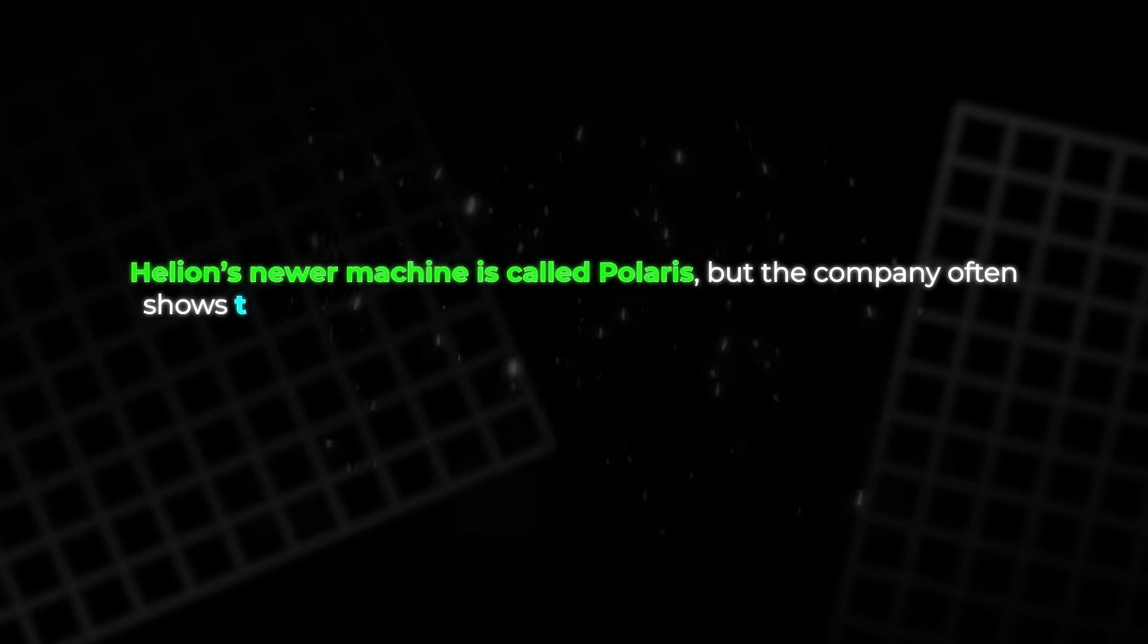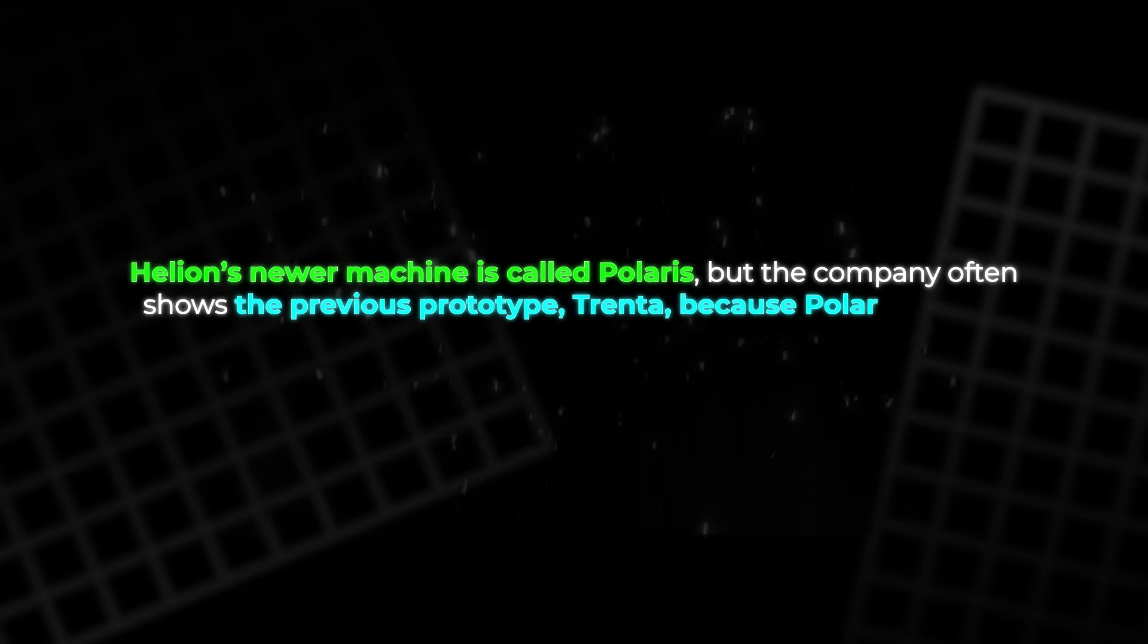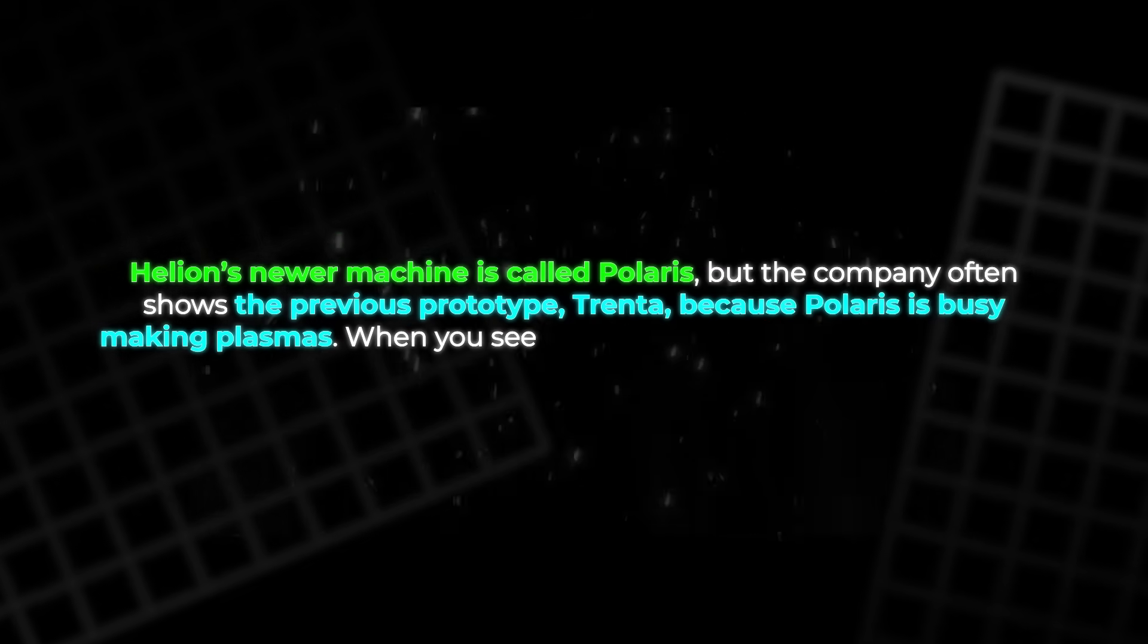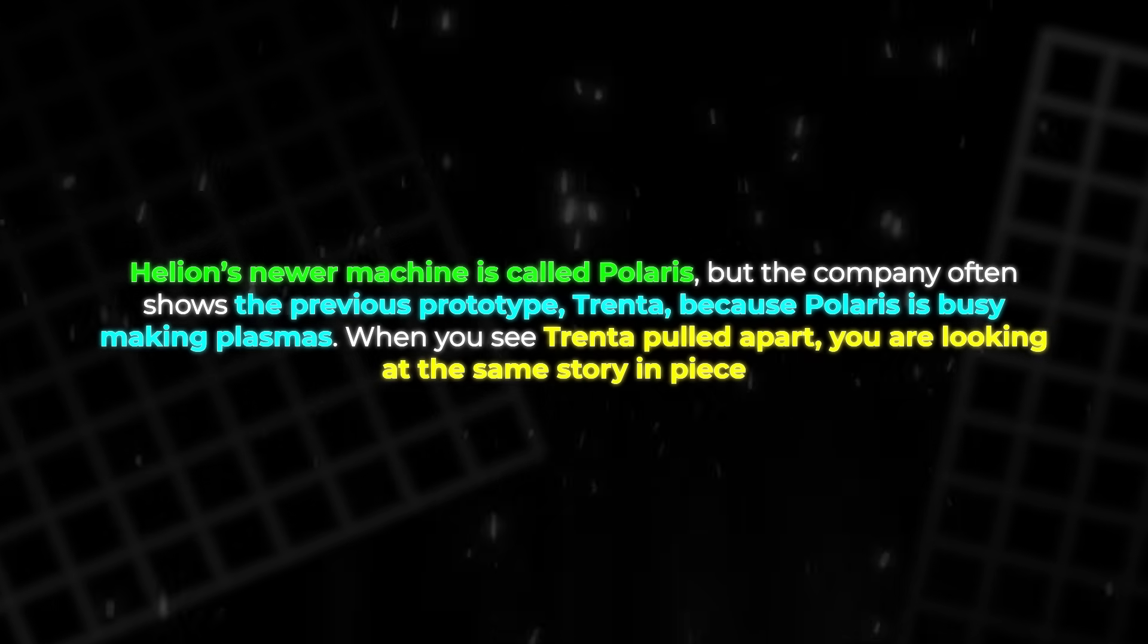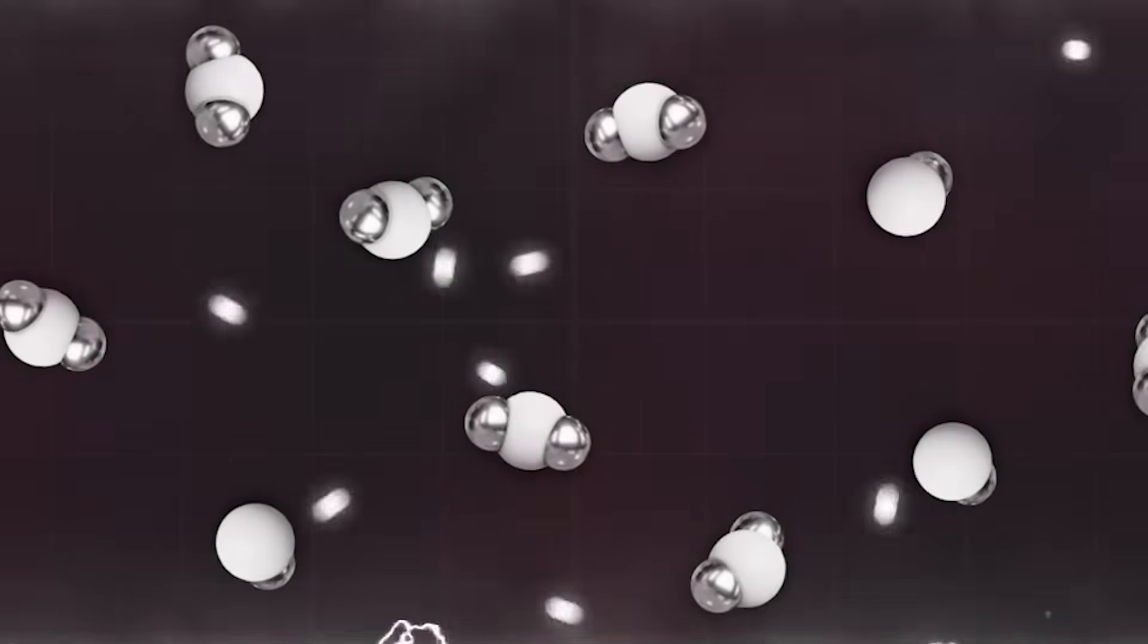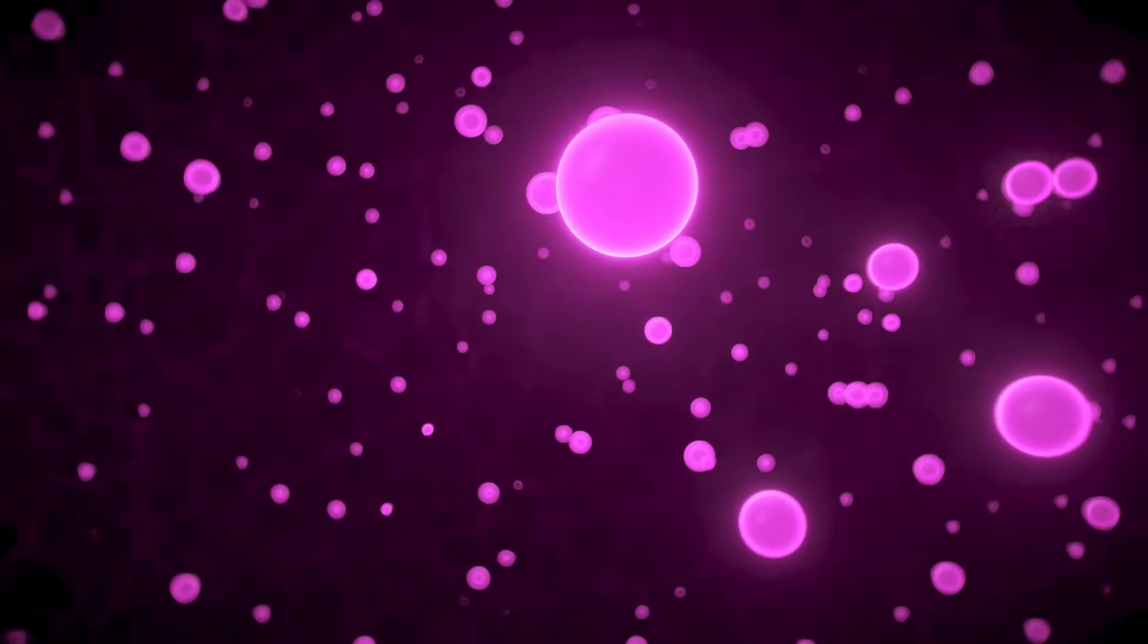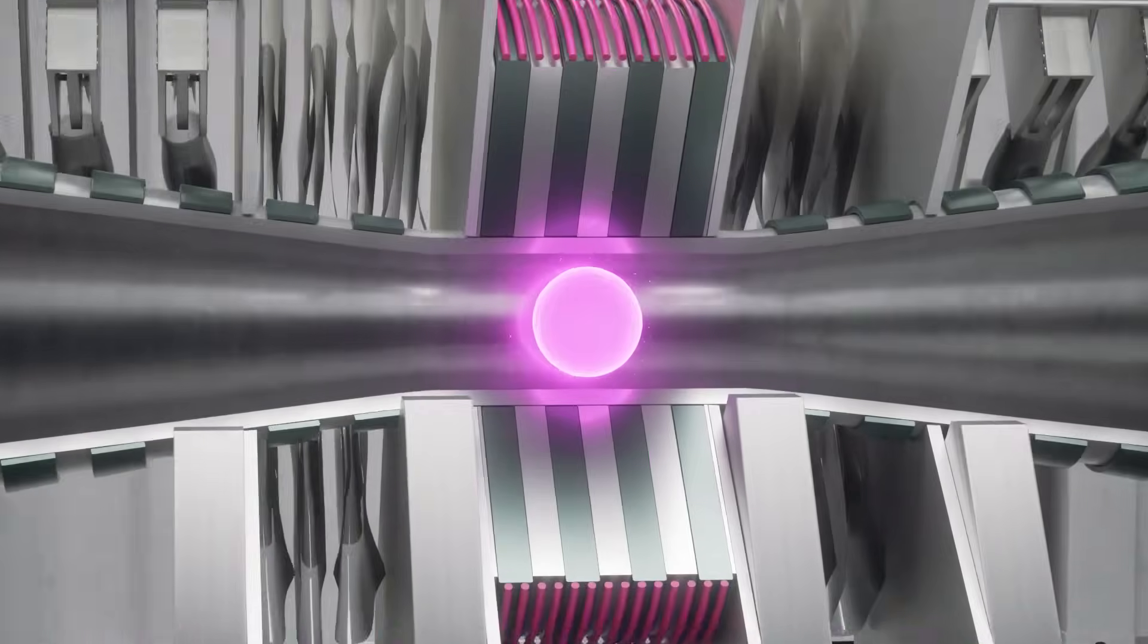Helion's newer machine is called Polaris, but the company often shows the previous prototype Trenta, because Polaris is busy making plasmas. When you see Trenta pulled apart, you are looking at the same story in pieces. Formation, then acceleration, then compression, all aimed at one violent controlled collision.